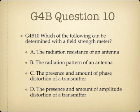Question 10. Which of the following can be determined with a field strength meter? A, the radiation resistance of an antenna. B, the radiation pattern of an antenna. C, the presence and amount of phase distortion of a transmitter. Or D, the presence and amount of amplitude distortion of a transmitter.